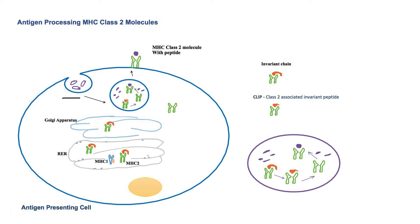As HLA class 2 molecules are synthesized in the endoplasmic reticulum, these molecules first have to reach endosomes to come across these peptides. As antigen presenting cells are also nucleated cells, they will have both HLA class 1 and class 2 molecules in the endoplasmic reticulum. So potentially, peptides that usually bind to HLA class 1 molecules could also bind to HLA class 2 molecules.